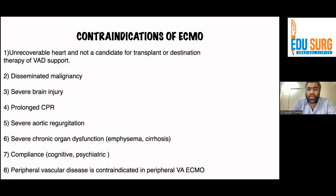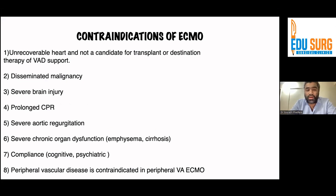Contraindications include: unrecoverable heart not a candidate for transplant or destination therapy with ventricular assist device support, disseminated malignancies, severe brain injury, prolonged CPR, severe aortic regurgitation, severe chronic organ dysfunction such as emphysema or cirrhosis, and psychiatric illness. Relative contraindications include peripheral vascular disease for VA ECMO.